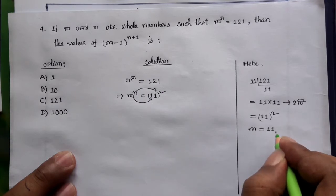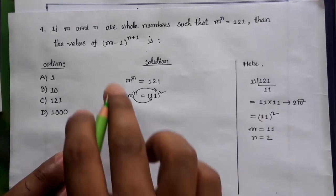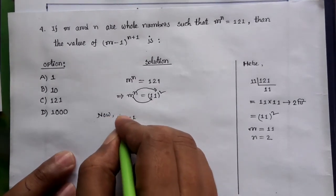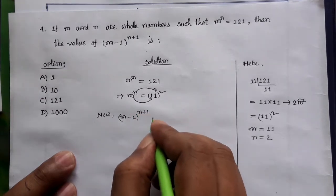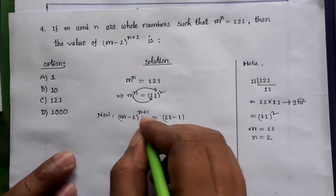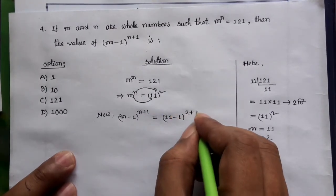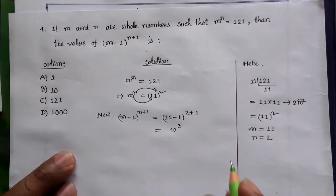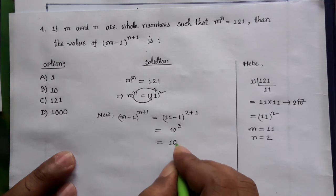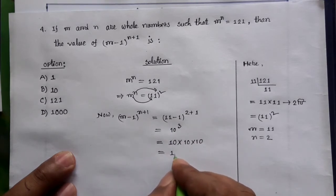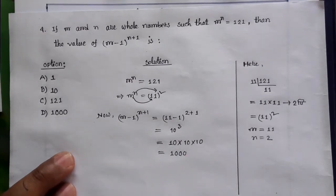So, M to the power N is equal to 2. M to the power N is equal to 1, and M to the power N is equal to 2. So M to the power N is equal to 2 plus 1.